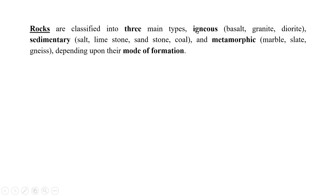Under igneous rocks: basalt, granite, diorite come under igneous. Limestone, sandstone, and coal come under the sedimentary rocks. And marble, slate, and gneiss come under the metamorphic rocks.